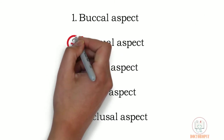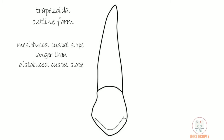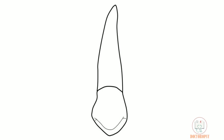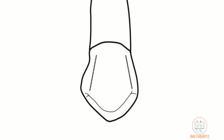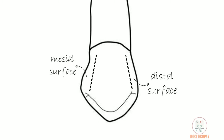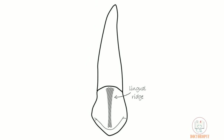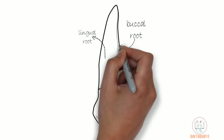From the lingual aspect, as the lingual cusp is shorter and narrower, all the outline form features from the buccal aspect are seen here as well. Additional features include: both cusps are visible, as the lingual cusp is smaller but sharp with its cuspal slopes meeting at a right angle. As the lingual cusp is narrower, more of the proximal surfaces are visible. A lingual ridge runs from the lingual cusp tip to the cervical line. The lingual root is smooth and tapering, and some part of the buccal root is also visible from this aspect.